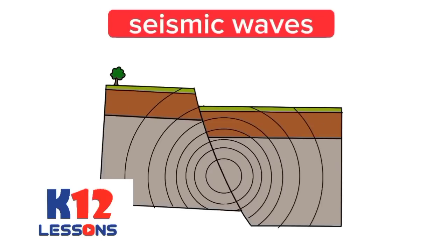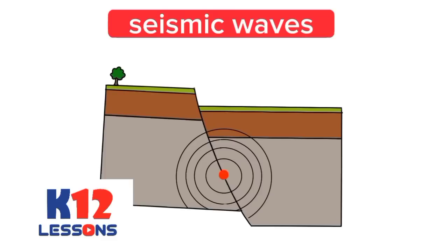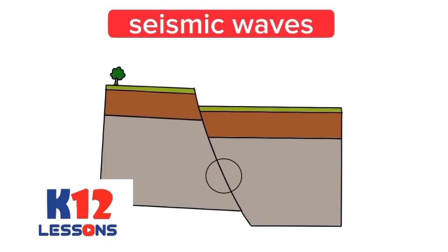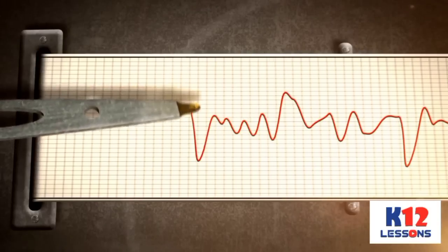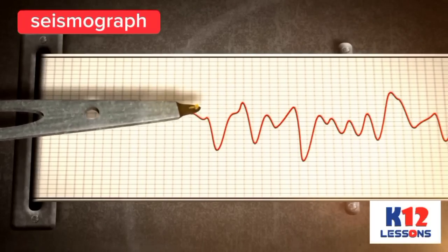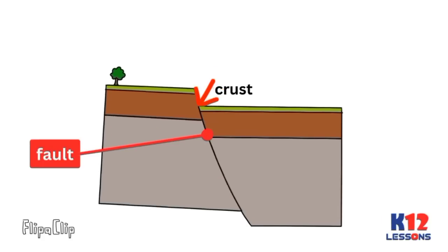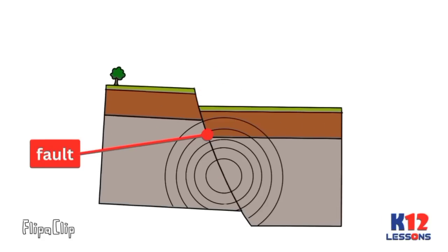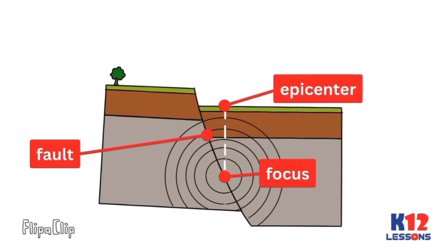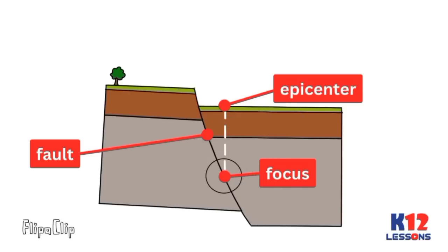The movement of molten material breaks the rocks in faults or cracks in the crust and causes seismic waves. Seismic waves are waves that travel through the Earth's layers and give out low-frequency energy. They are recorded using a seismograph. When rocks break in a fault or crack in the crust, an earthquake occurs. The point of origin of an earthquake underground is the focus. The point directly above the focus on the surface of the Earth is the epicenter. It is at the epicenter that an earthquake is felt the strongest.